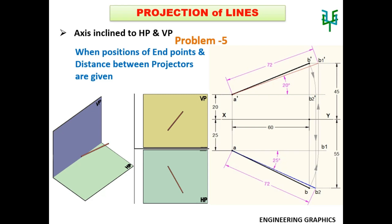This video explains the topic projection of lines with the condition axis inclined to both HP and VP. We are going to discuss a problem when the positions of endpoints of the line and distance between projectors are given. Then its true length and inclination with HP and VP are to be found out. Let us see the problem.